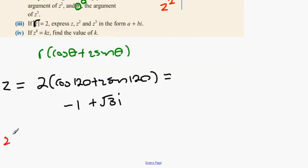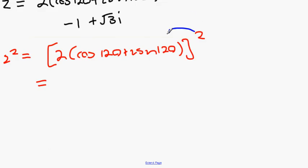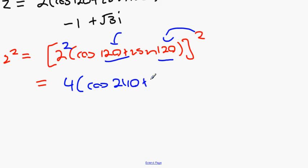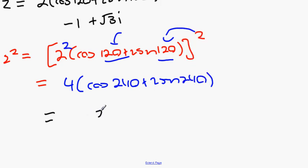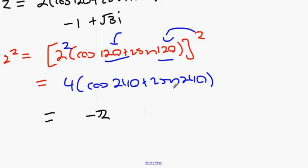Now we need to find Z squared. Z squared equals (2(cos 120 + i·sin 120)) squared. Using De Moivre's theorem, we multiply the angle by 2 and square the modulus: giving 4(cos 240 + i·sin 240). So 4·cos 240 is minus 2, and 4·sin 240 is minus 2 root 3 i. Therefore Z squared equals minus 2 minus 2 root 3 i.